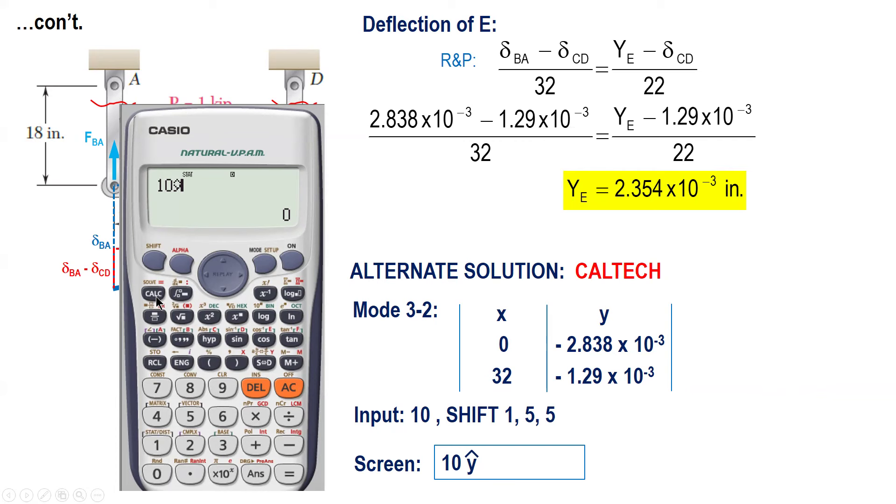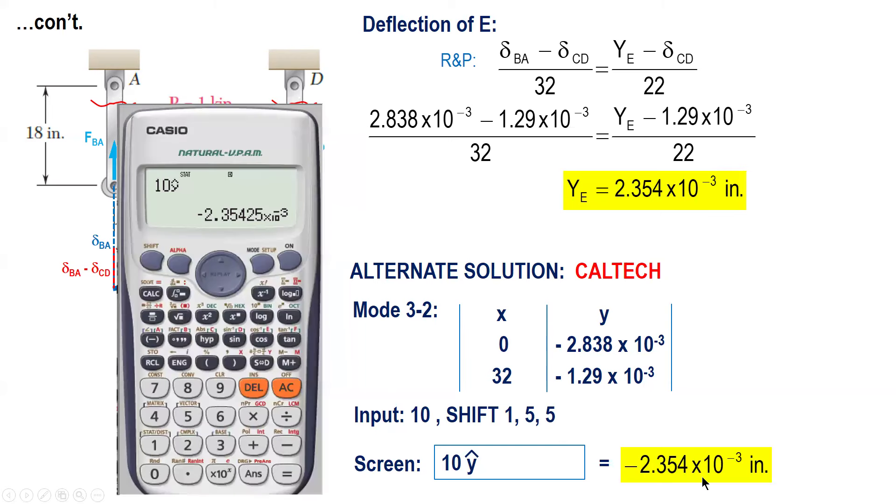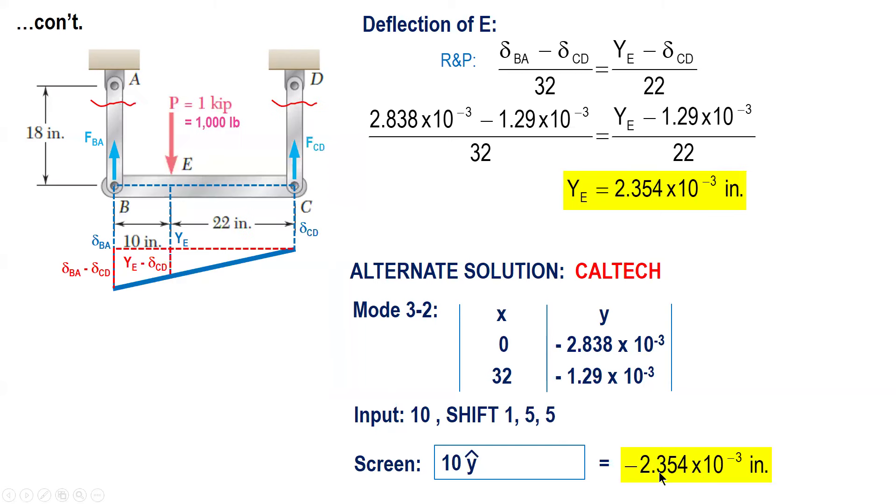Then regression 5. So you press 5 and then Y correct is 5, so 1 and the second 5. And then press equal sign. It's negative 2.354 times 10 raised to negative 3.